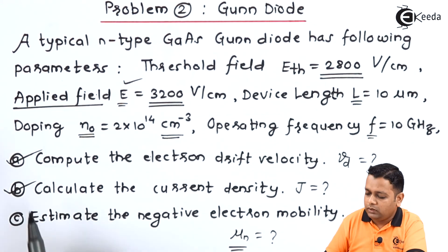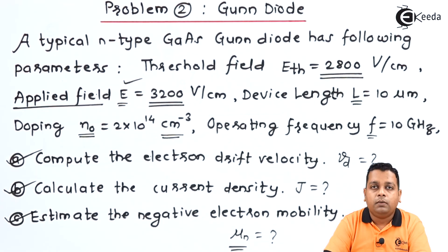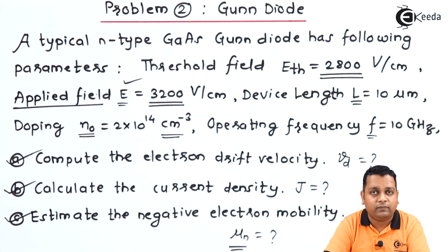This completes the calculation of all three answers for parts (a), (b), and (c) for problem number two of the Gunn diode. By the next lecture we shall be addressing the next topic for the transferred electron device — the high field domain. For more information like this, you can subscribe to the Ekda channel. Thank you.